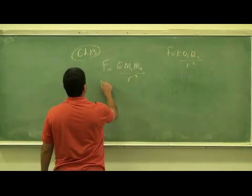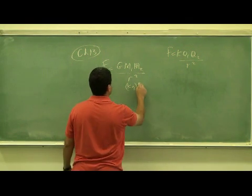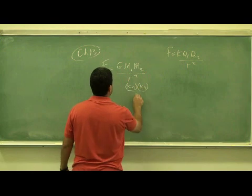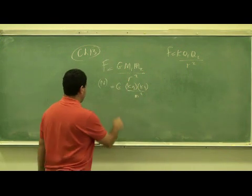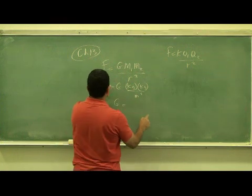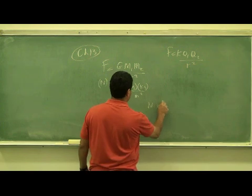This is Newtons for the force unit. This is kilogram for the mass, kilogram divided by meter squared. So G must have units of, in order to make the units work out, Newton meter squared divided by kilogram squared.